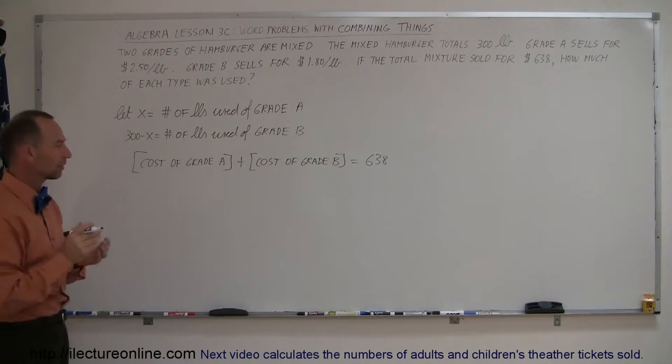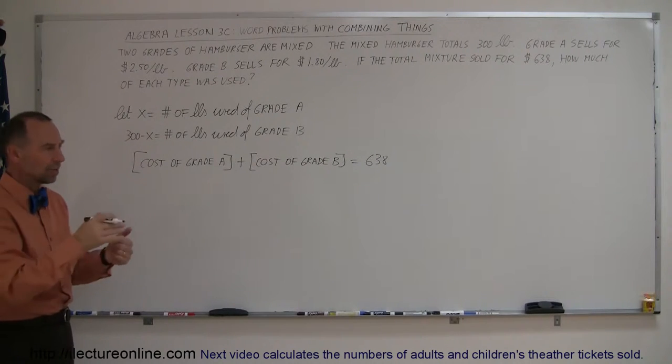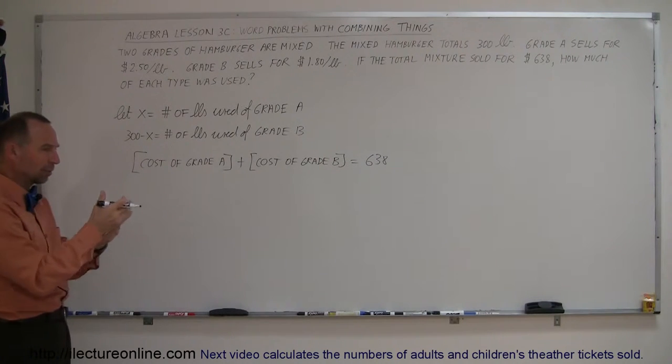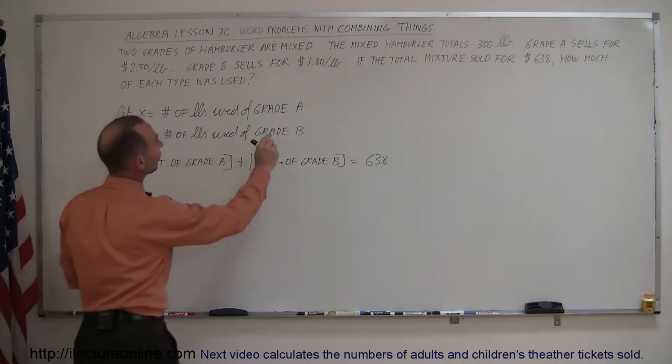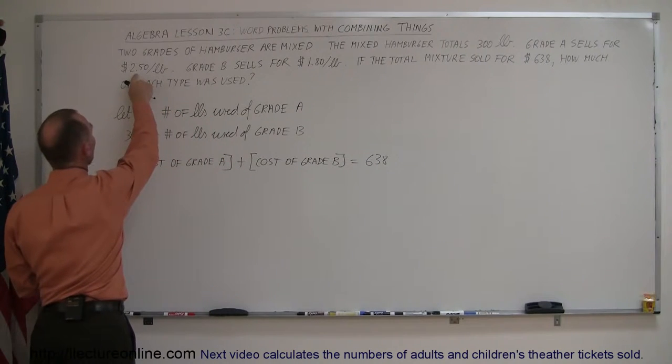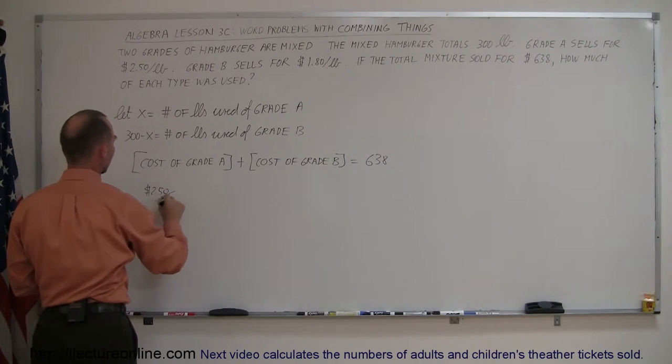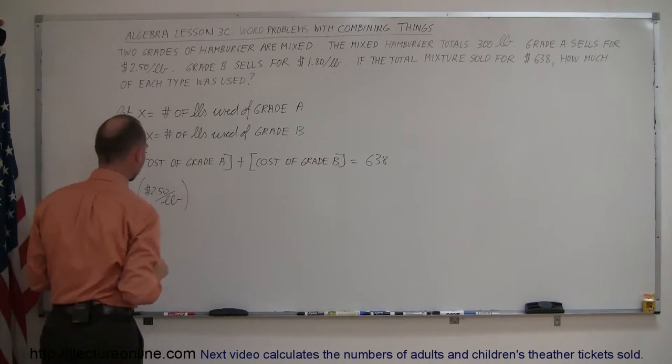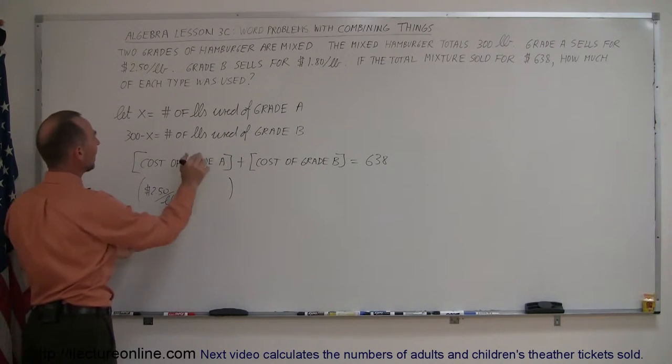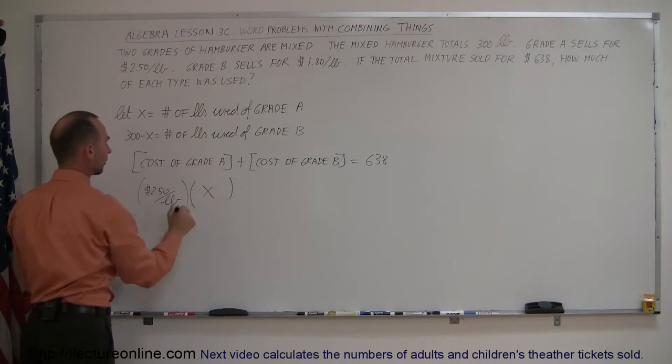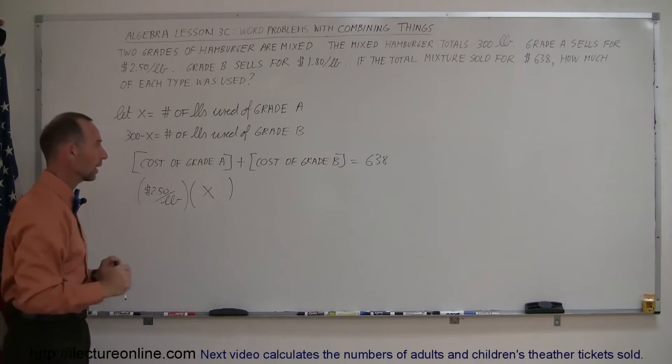How do you figure out the cost for the grade A hamburger? Well, the price per pound times the number of pounds. For each pound it costs this much, and you multiply it times the number of pounds, that gives you the total cost for grade A. What is the cost per pound for grade A? For grade A, we had a cost of $2.50 per pound. That's the cost per pound, and we multiply it times the number of pounds for grade A, and here we define grade A as being X number of pounds. So, this much per pound times this many pounds gives you the total cost for grade A hamburger.